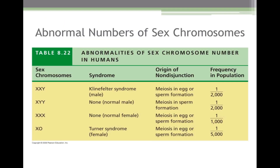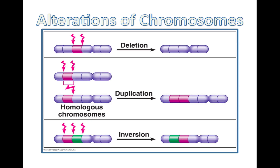Abnormal numbers of sex chromosomes: Klinefelter syndrome, for example, is when a male has an extra X chromosome. But sometimes an abnormal number of sex chromosomes has no effects on a person — an example is a man with an extra Y chromosome. Alterations of chromosomes: one example is a deletion of a segment on a chromosome. Another alteration could be that a chromosome makes a copy of a segment and adds it to a homologous chromosome, resulting in a duplication. Lastly, a chromosome may reverse the order of the segments, resulting in an alteration known as inversion.